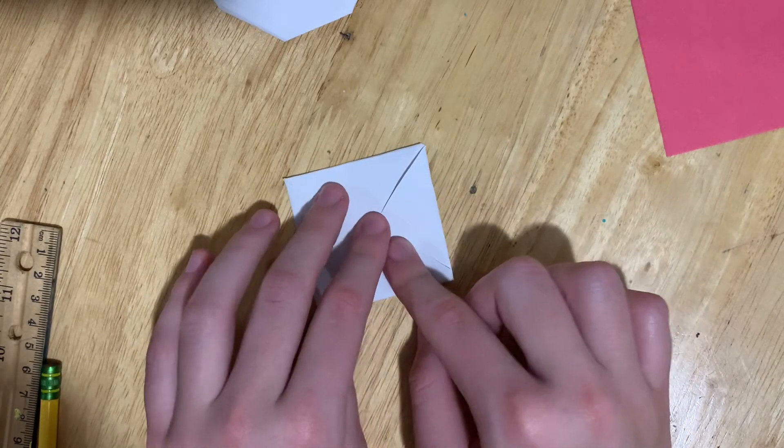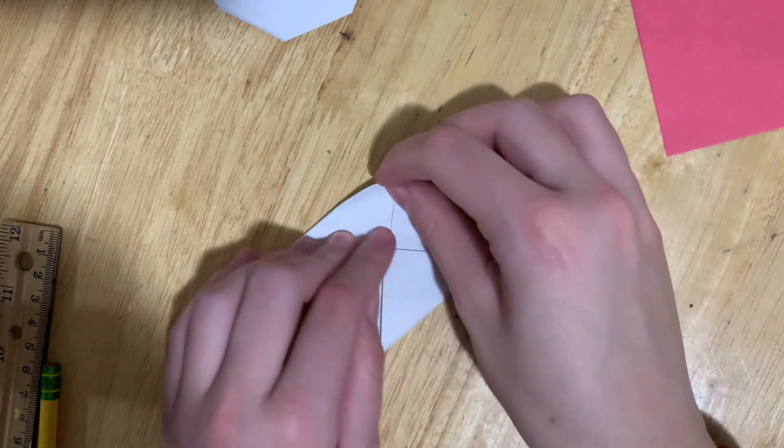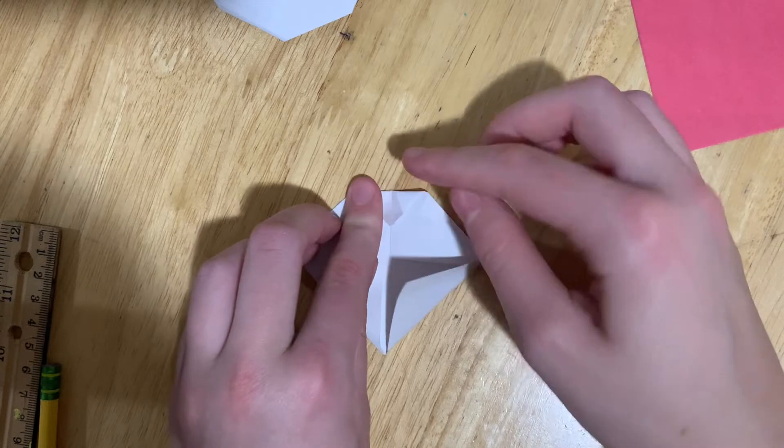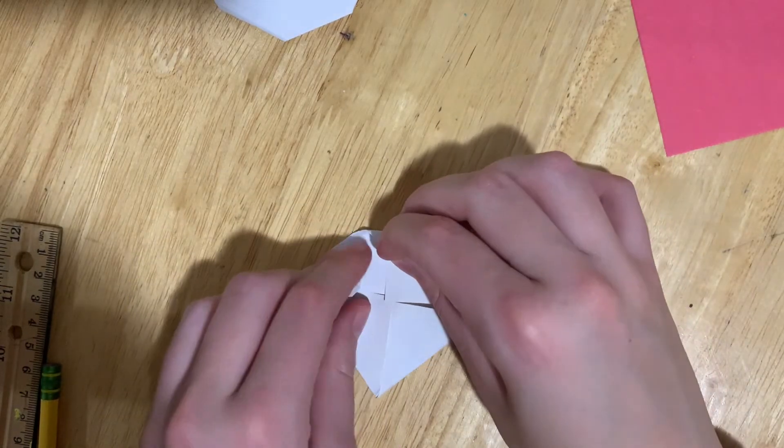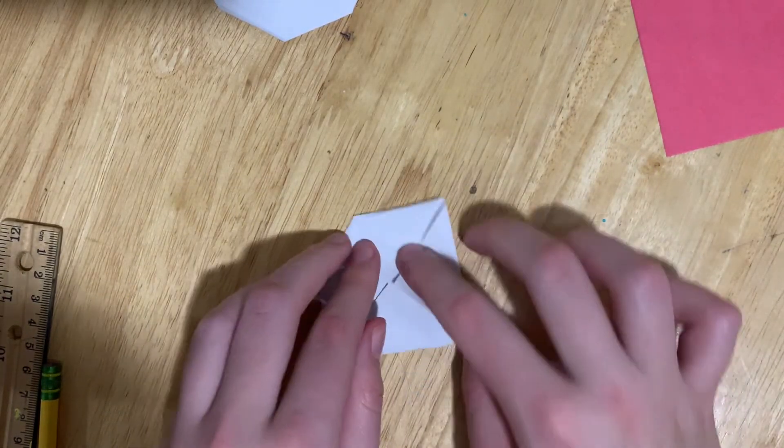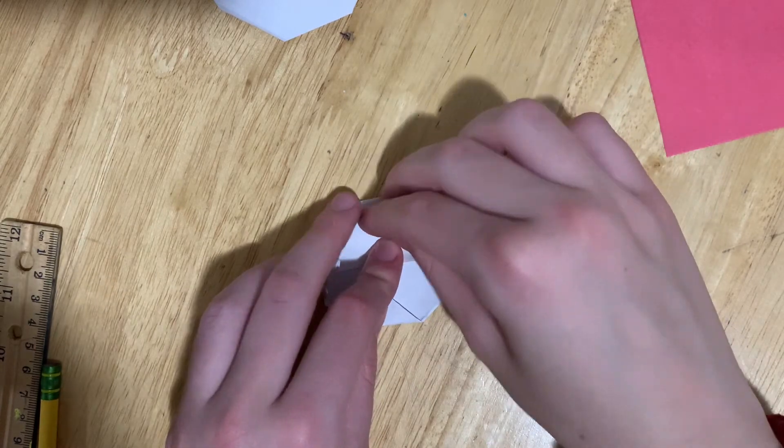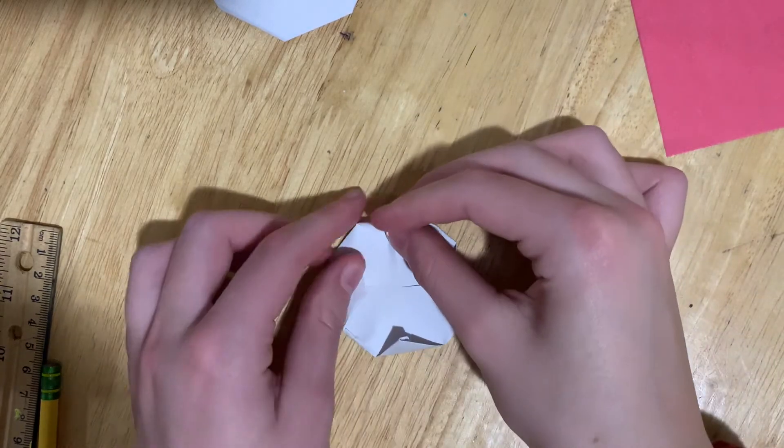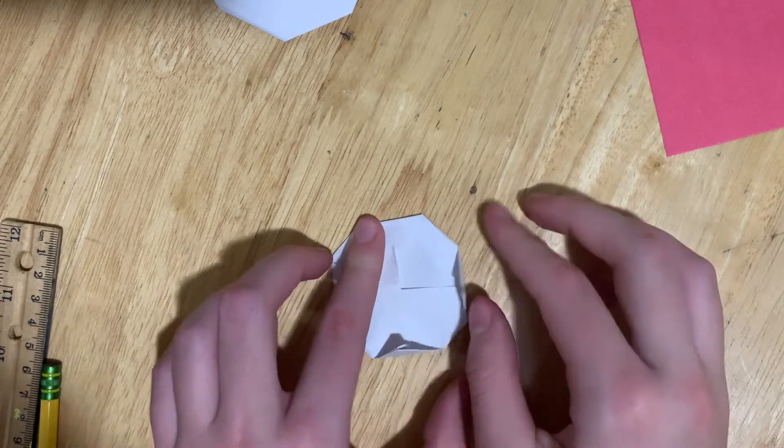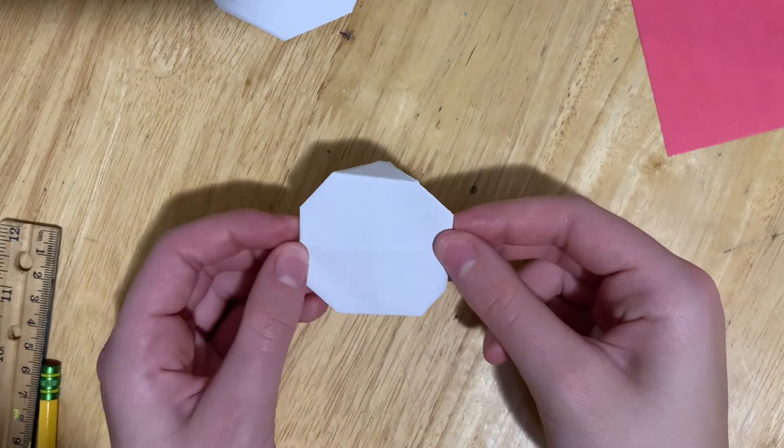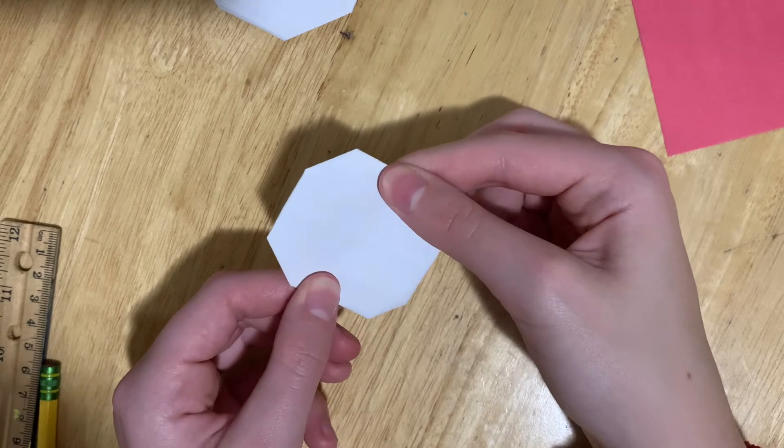Then, fold the peaks halfway to the middle. And if you turn your paper around, it should look like a hexagon. This is the top of our snowman.